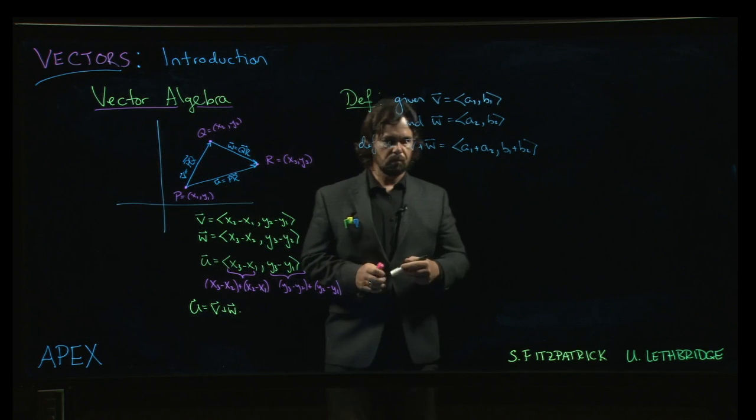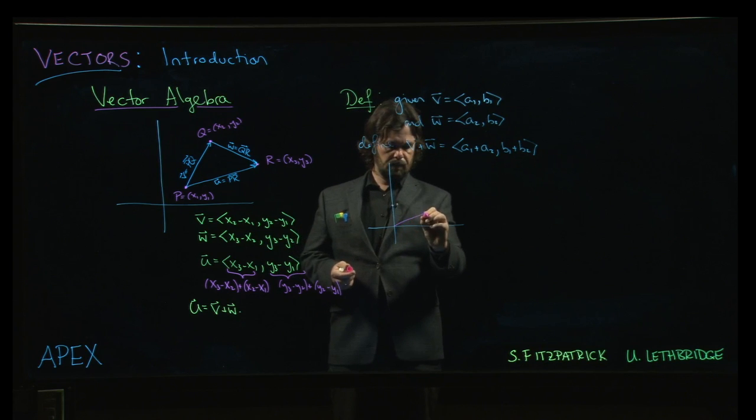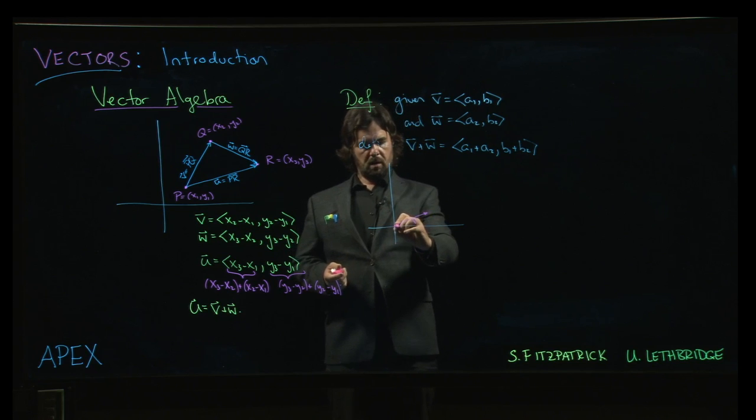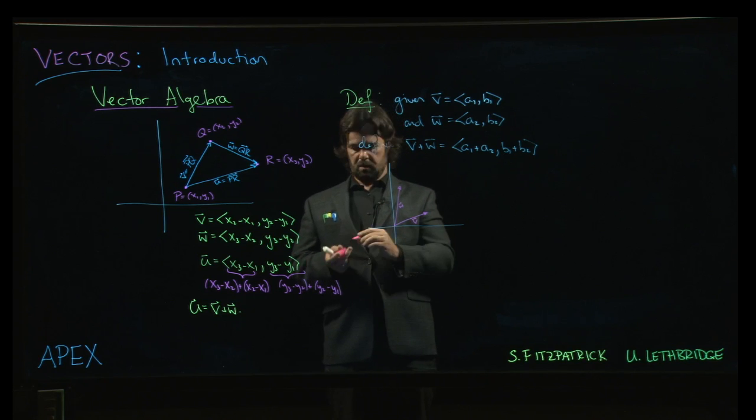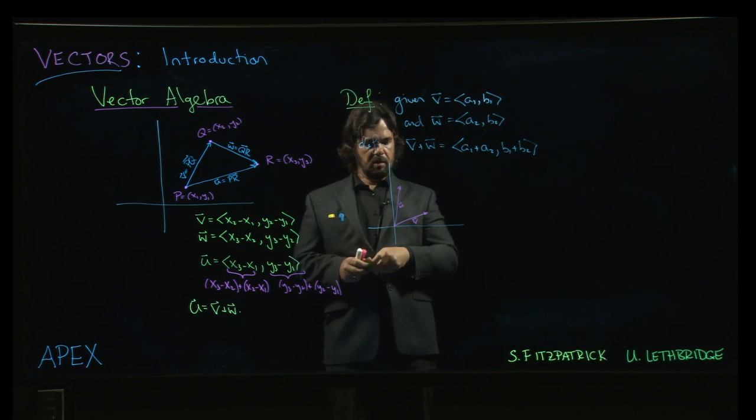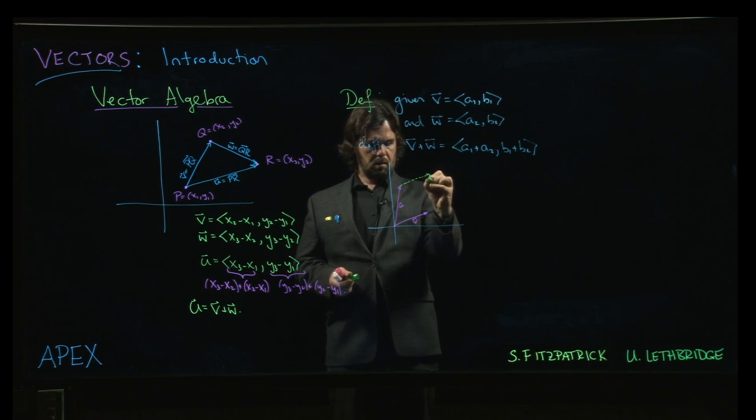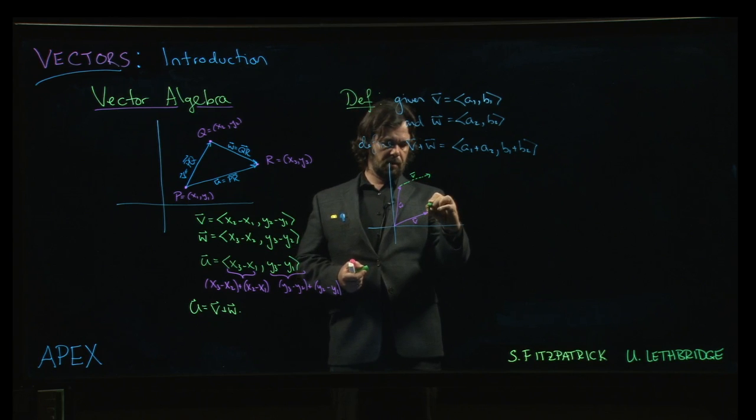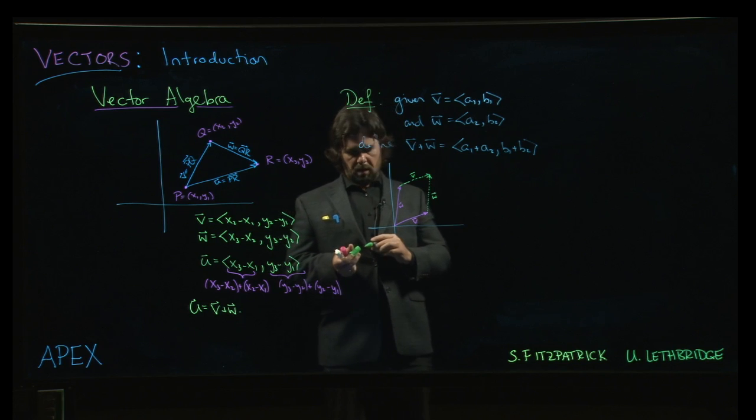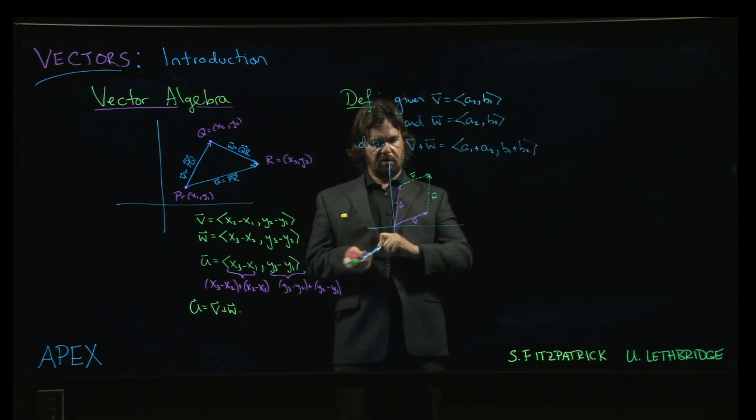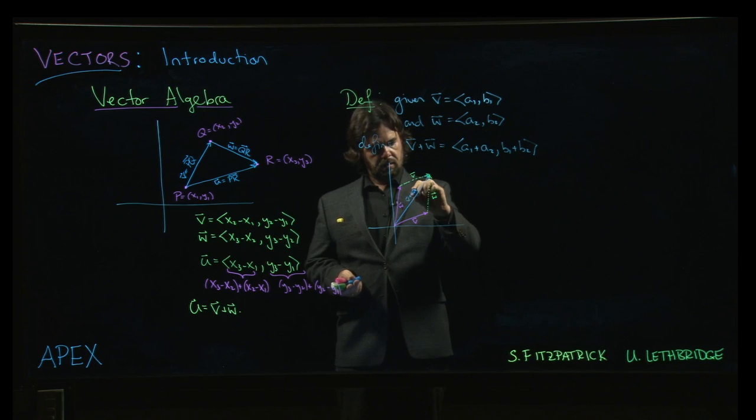There's a geometric rule here for adding the vectors. This is something that you can make sense of in general. If this is V and that's W, what I can do is take a copy of V, because we can move the vectors around. I could draw another copy of V that has its tail at the tip of W, or I could draw another copy of W that has its tail at the tip of V. It turns out that we get this parallelogram, and the diagonal of that parallelogram, that's exactly V plus W.